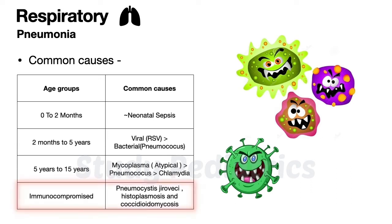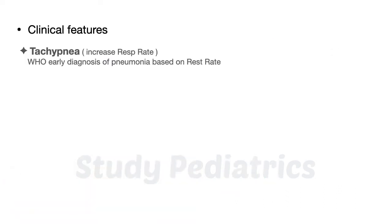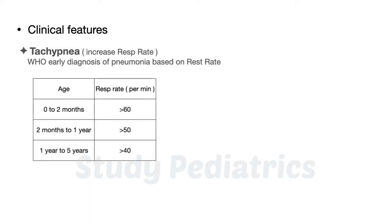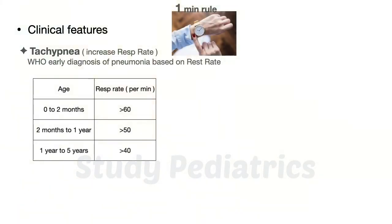The most important clinical feature of pneumonia is tachypnea, which is an increase in respiratory rate. WHO gave criteria for early diagnosis based on respiratory rate: more than 60 in 0 to 2 months, more than 50 in 2 months to 1 year, and more than 40 in 1 to 5 years. The respiratory rate must be counted for at least 1 minute.